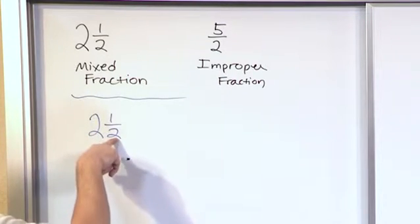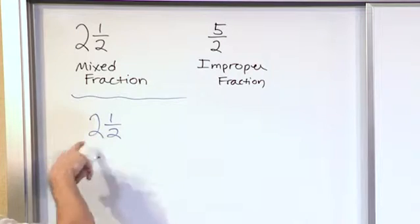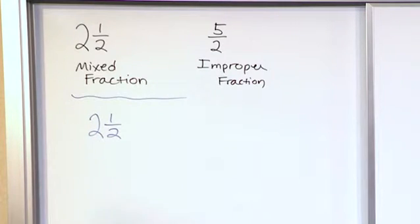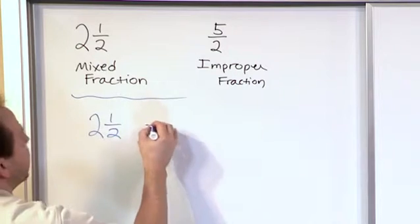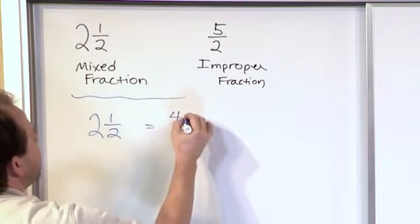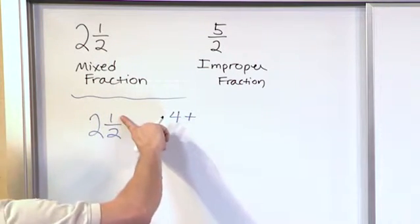The way you do it is, here you have two and a half. You take the bottom number, the denominator, and you multiply it by the two. That is going to get you four. Two times two is four, right?